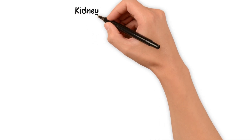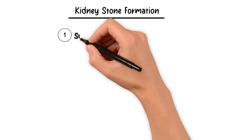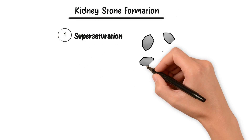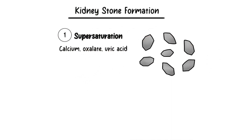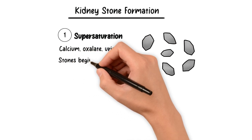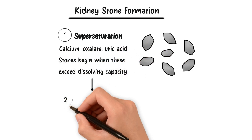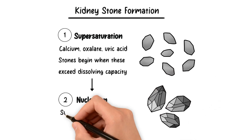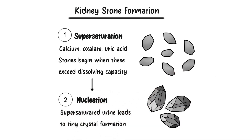Now let's talk about kidney stone formation. The pathophysiology behind this process is quite fascinating. Step one is supersaturation: our urine contains various substances such as calcium, oxalate, and uric acid. When the concentration of these substances becomes too high, it exceeds the ability of the urine to dissolve them. Step two is nucleation: in supersaturated urine, tiny crystals can start to form, which are the building blocks of kidney stones.